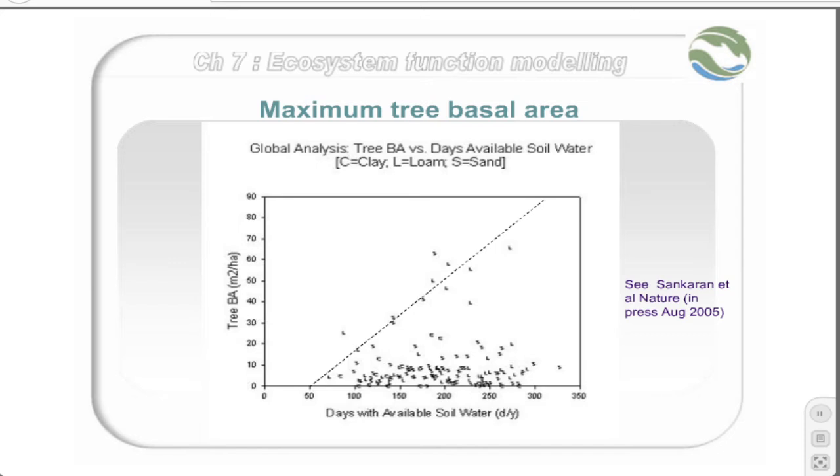Considering savannah data from all around the world, there is a clear upper limit to the amount of tree biomass or leaf area that a piece of land can support given its water balance. This line represents the limit of tree-on-tree competition.